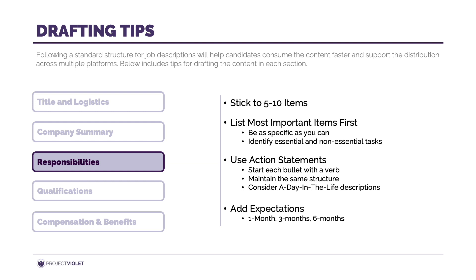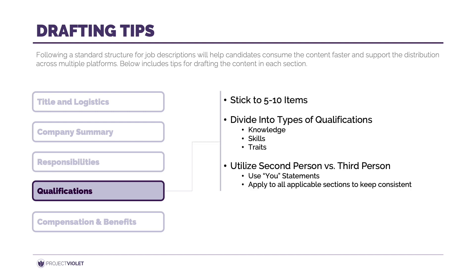For qualifications, again stick to five to ten items. You can touch on three areas: knowledge — such as education or experience; skills — anything necessary to do the job; and traits — describing what type of person you're looking for who would fit your culture and operating principles. For both responsibilities and qualifications, try using the second person instead of the more formal third person. Using "you" in these statements feels a lot more personal and helps the reader see themselves in these roles.